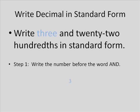The first thing we're going to do is write the number we see before the word AND. And this is pretty simple. I'm just going to write down the number 3. I see that word AND, and that means put the decimal in.